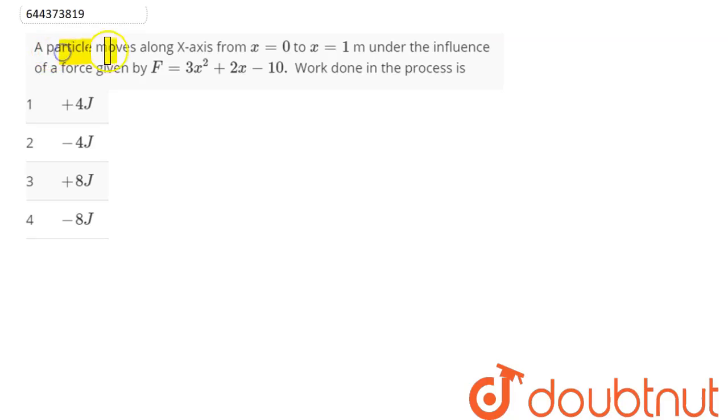Question is: A particle moves along x-axis from x equal to 0 to x equal to 1 meter under the influence of a force given by f equal to 3x squared plus 2x minus 10. Work done in the process is.